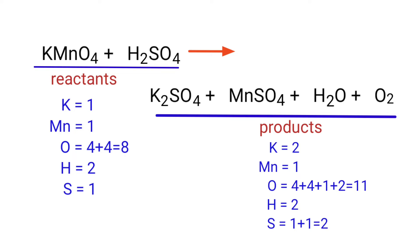In the reactants side there are 1 Potassium atom, 1 Manganese atom, 8 Oxygen atoms, 2 Hydrogen atoms, and 1 Sulphur atom. In the products side there are 2 Potassium atoms, 1 Manganese atom, 11 Oxygen atoms, 2 Hydrogen atoms, and 2 Sulphur atoms. The number of atoms are not balanced on both sides.